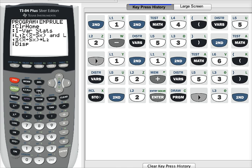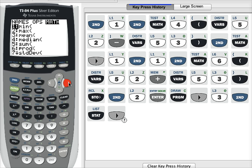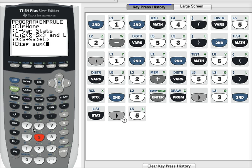We need to take the sum of list 2. Second, stat button, right arrow twice. The sum is option number 5. To get list 2 in there, I have to press 2nd and 2. Close my parentheses.